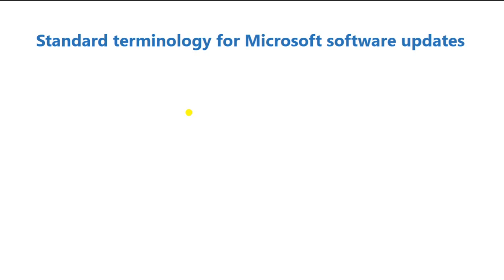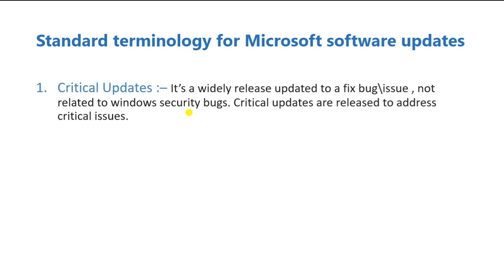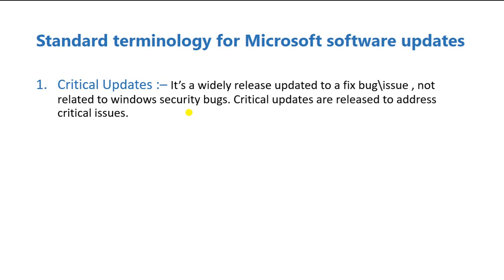Now let's look at the standard Microsoft software update terminology. Microsoft uses specific naming for different types of updates. In SCCM, you'll find patch types called Critical Update, Definition Update, and others. Let's understand each definition so it's clear which patches to deploy or not deploy in your infrastructure.